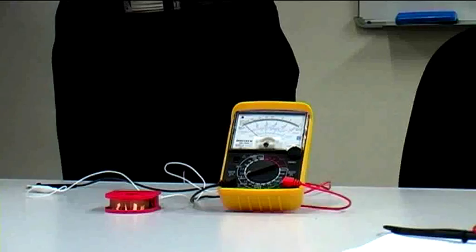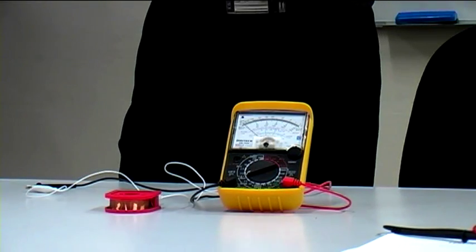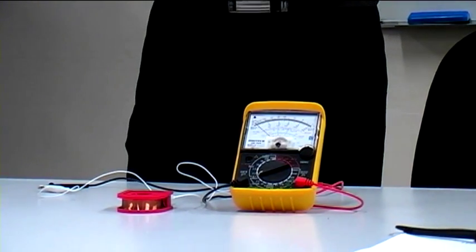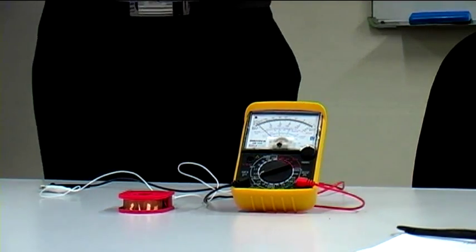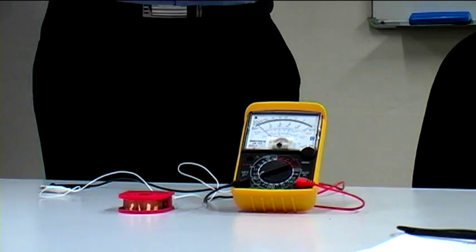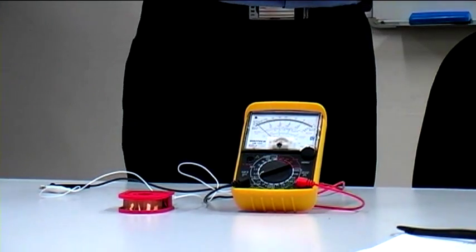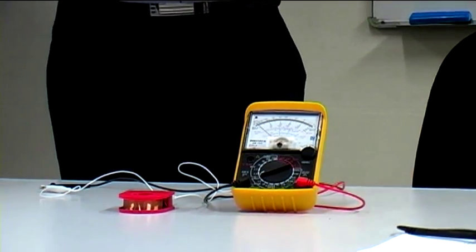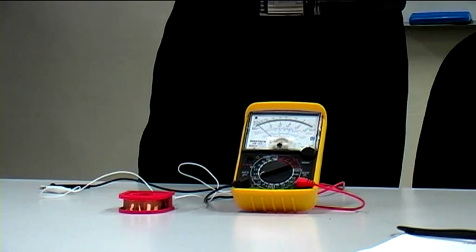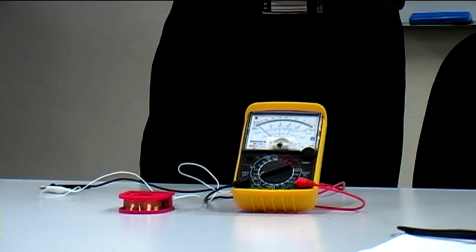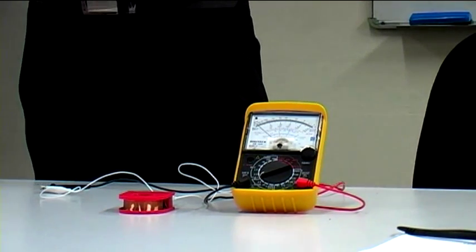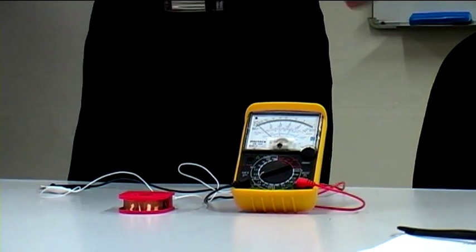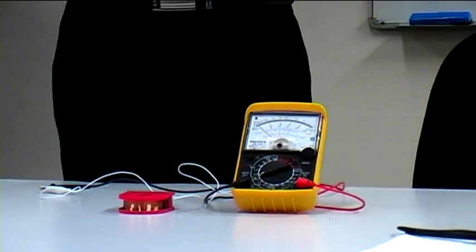Now the three things that your syllabus requires you to test are the distance between the coil and the magnet, so whether the distance has an effect on the actual current produced, whether the strength of the magnet actually has an effect, and whether the relative motion, how quickly you're moving it, has an effect. So these are the three factors that we're going to test. So first things first is test the distance. So we use a slightly stronger magnet.